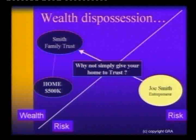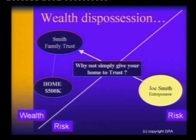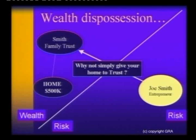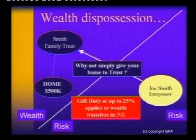In this very simple example, we've got a home that's worth $500,000. To protect it, we could simply transfer it to the trust and say to the trustees: that's now your asset, that's a gift. Why can't we simply do that in New Zealand? Gift duty. So instead, what we do is enter into a gifting programme to avoid this up to 25% tax that arises on the transfer of the asset into the trust.